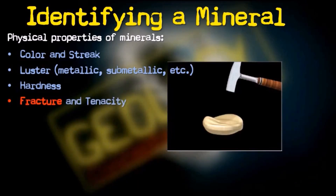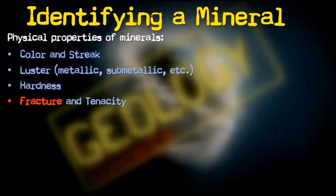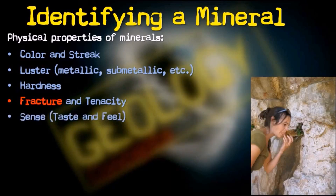Moving on to fracture and tenacity. Fracture is the property describing how a mineral breaks; there are various types that will be covered in a separate video. Tenacity is the behavior of a mineral under stress: it may be brittle (breaking into pieces or powder, e.g., calcite), sectile (can be cut with a knife), malleable (can be beaten into sheets), flexible, or elastic.